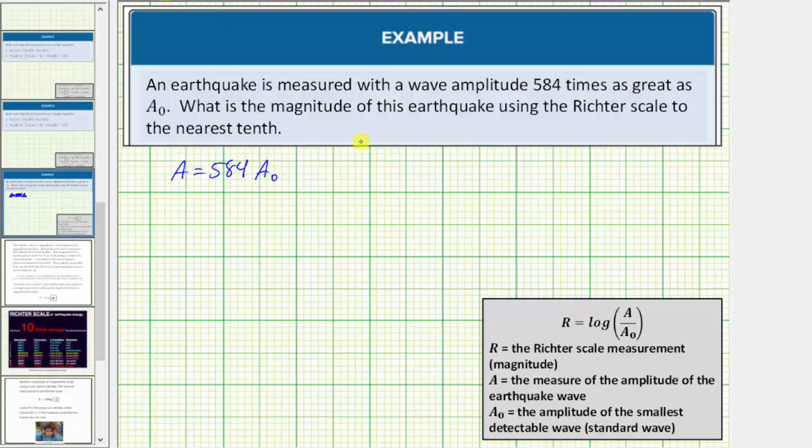So now using the Richter scale formula, R equals log of A divided by A₀, we'll substitute 584 A₀ for A, and then evaluate the log.